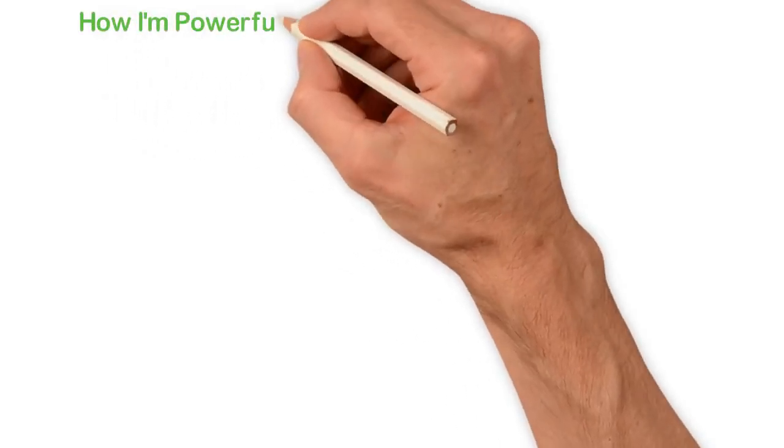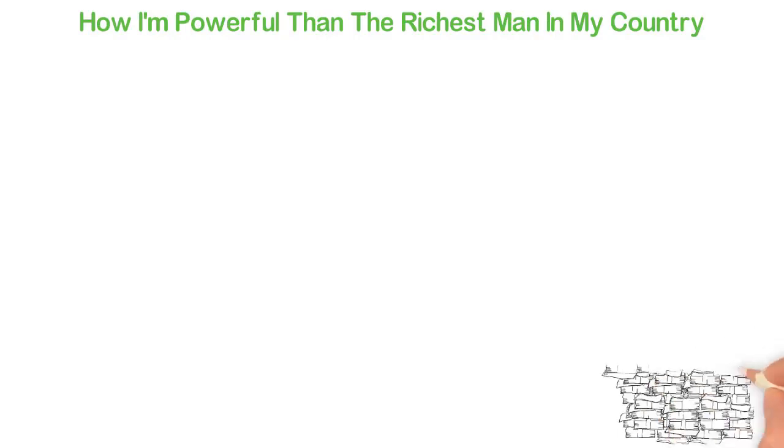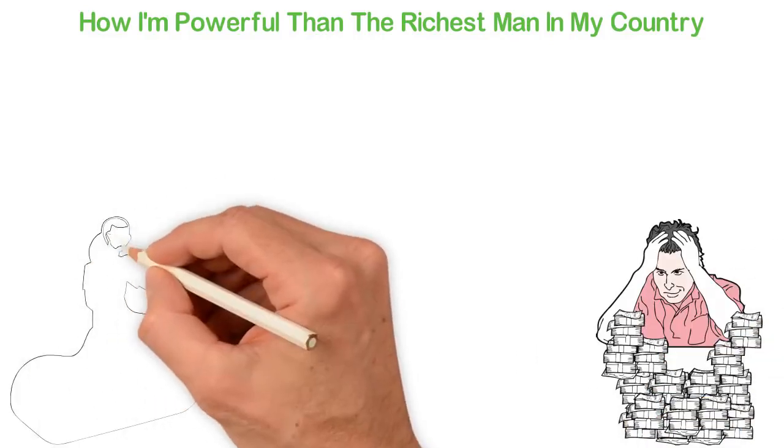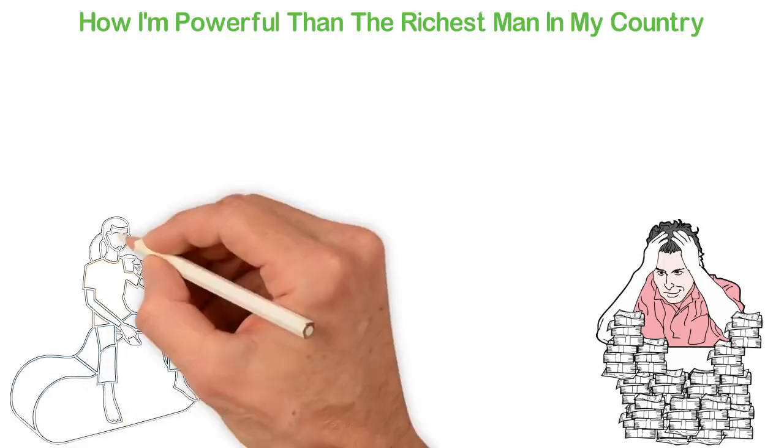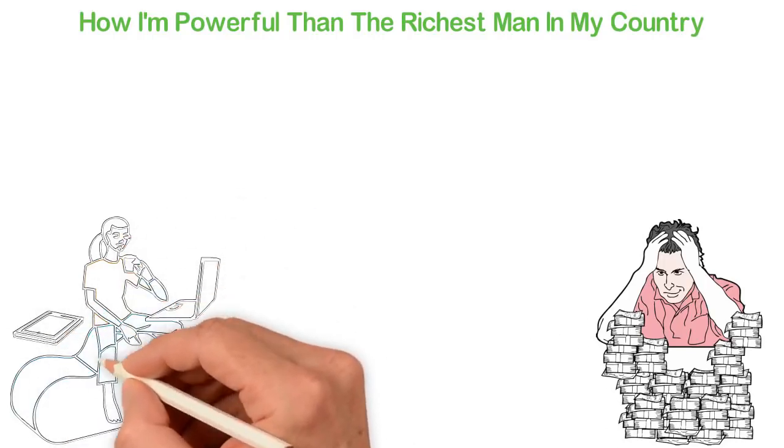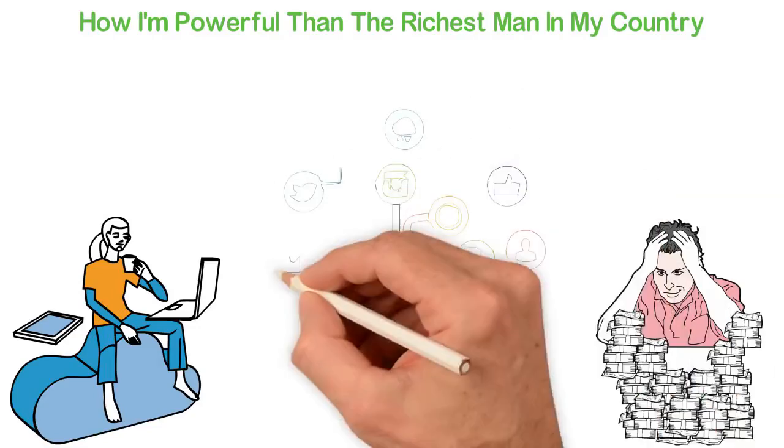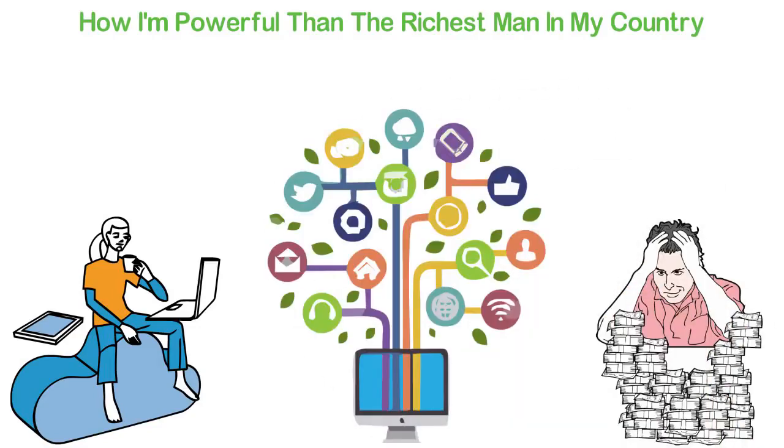How I'm more powerful than the richest man in my country. I once heard an interview of the richest man in my country. He was complaining about the fact that a certain country didn't allow his products to be sold in their country. But here I am—I run a media company that reaches people in more than 20 countries and can reach any other country I want at any time, as long as they use the internet in that country. You see how I'm more powerful than the richest man in my country? That's the wonder of the internet.